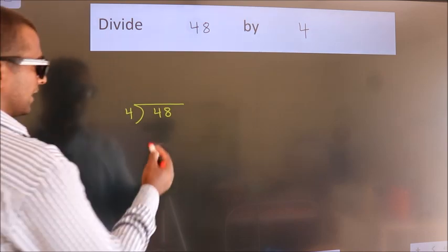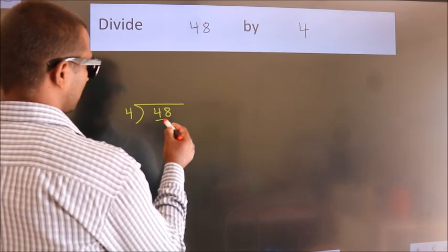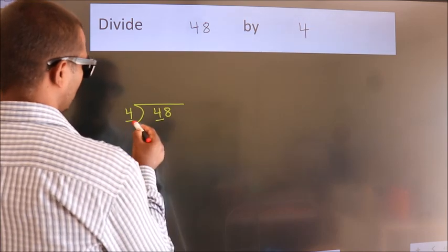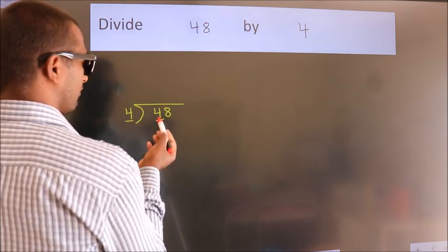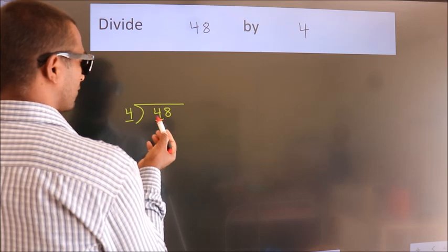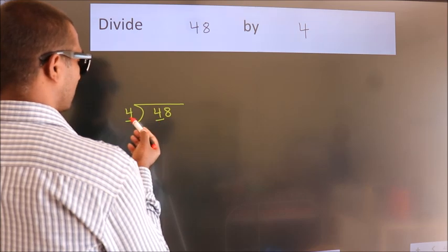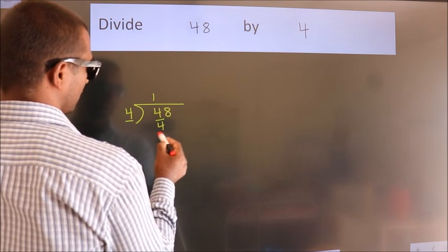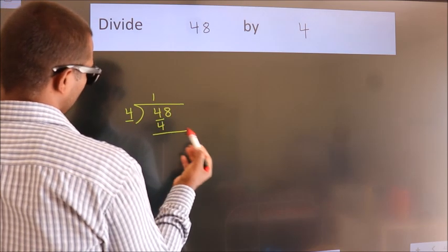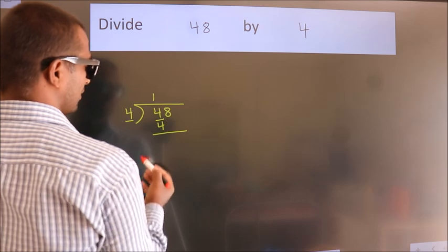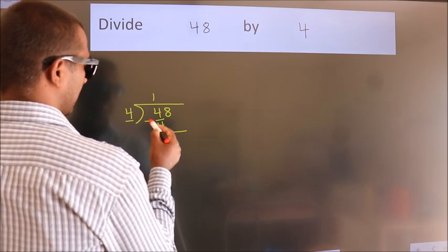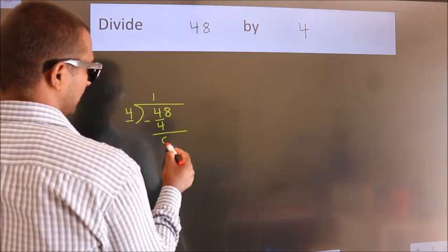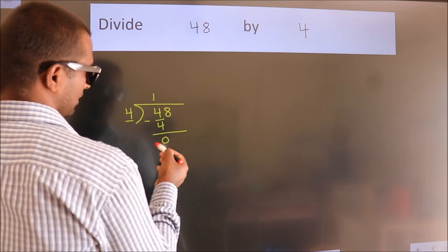Here we have 4. When do we get 4? In the 4 table: 4 once is 4. Now we should subtract. We get 0.